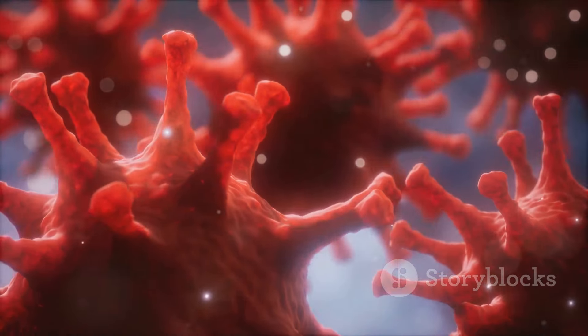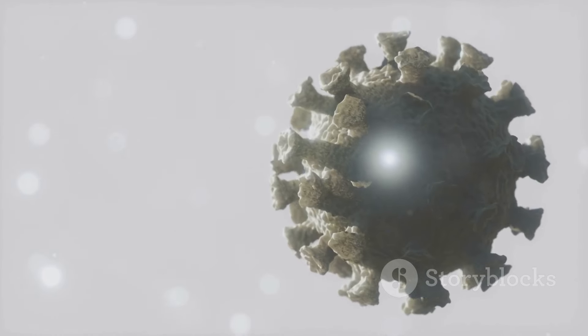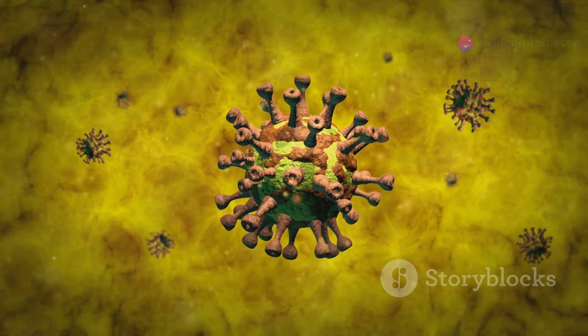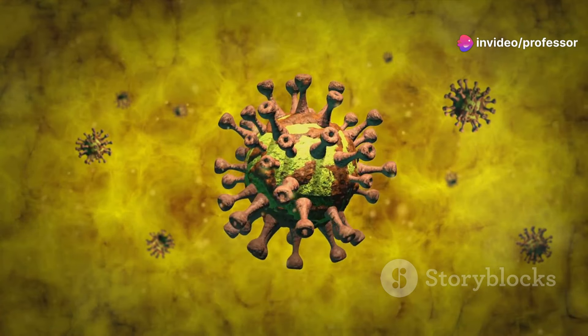They're found mostly on cells in our lungs, heart, and intestines. When the virus's spike protein connects with these receptors, it's as if the virus has successfully found its specific entry point to invade.